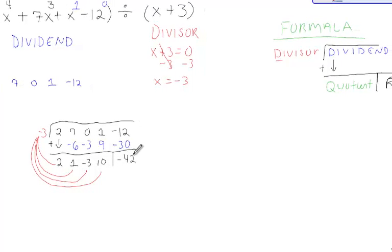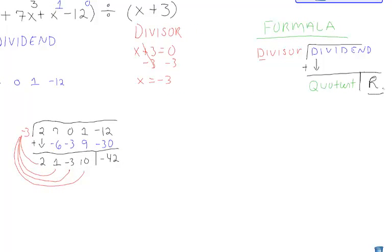The last number will always be our remainder, so therefore we already have one answer: r equals negative 42.